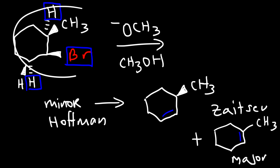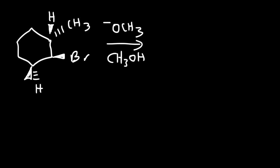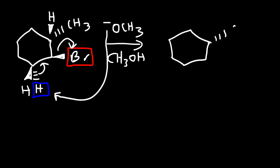Based on this specific stereoisomer, we can get a mixture of two products. Now let's consider a different stereoisomer where the bromine is still in the front, but this time the methyl group is in the back. With methoxide and methanol, we draw the hydrogens: there's an H in the front and two hydrogen atoms on the other side. Because the bromine atom is on the wedge, we can only remove the hydrogen on the dash — we cannot remove the other hydrogen. So therefore we're only going to get one product: the Hofmann product.